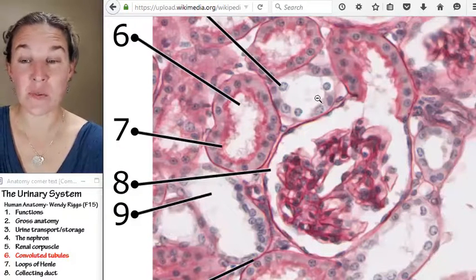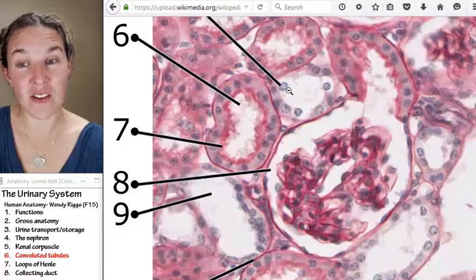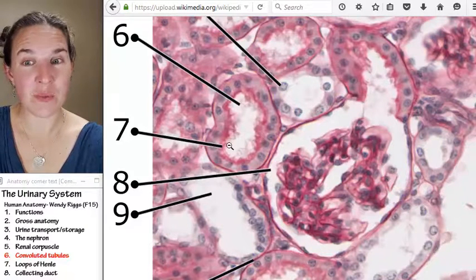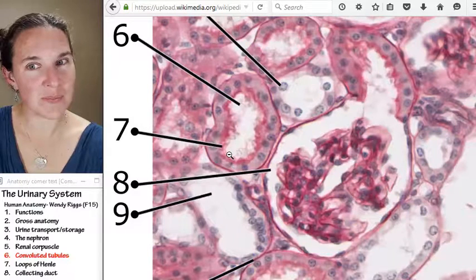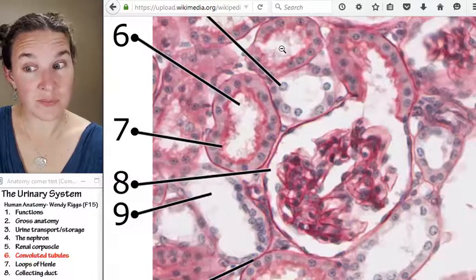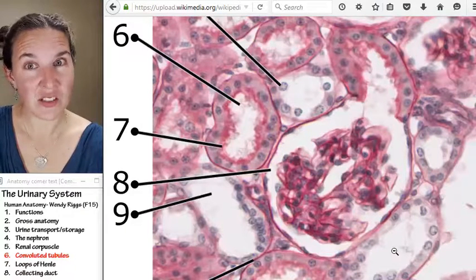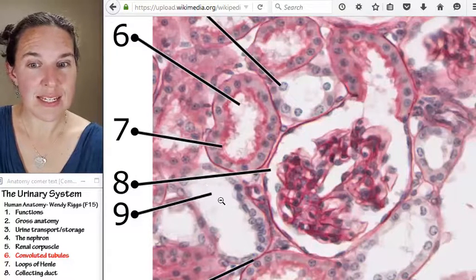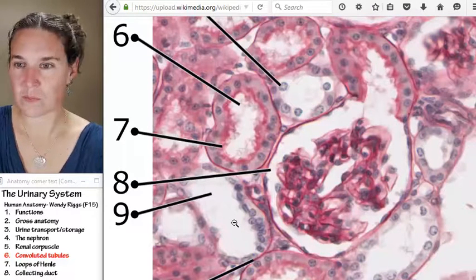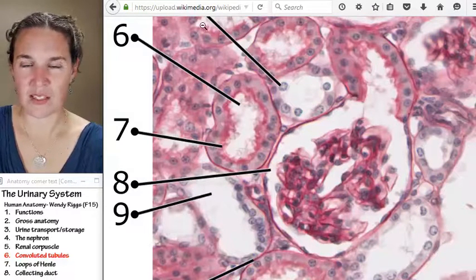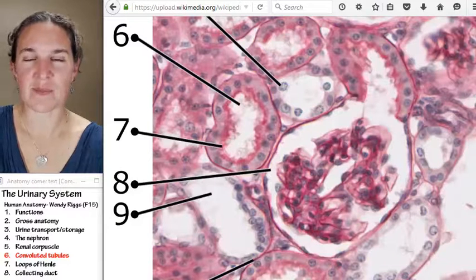This one is distal convoluted tubule. This one is proximal. Proximal, distal. Distal, that looks like proximal up there. What's the difference?